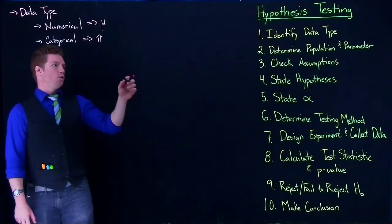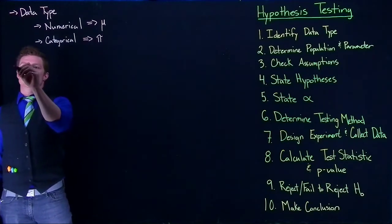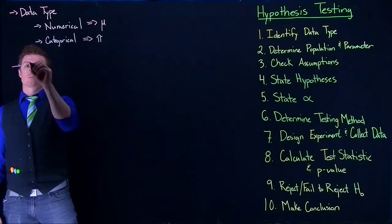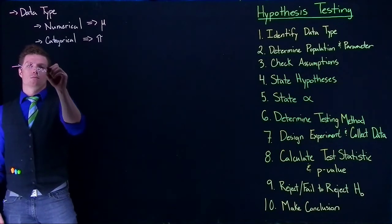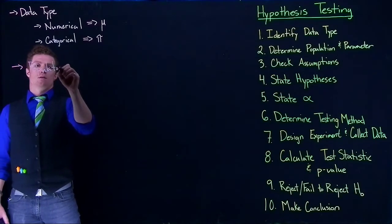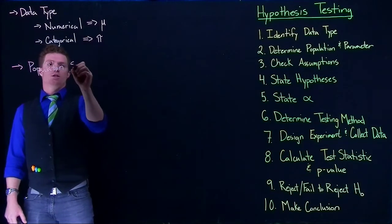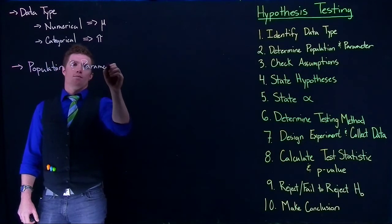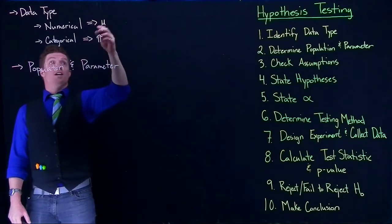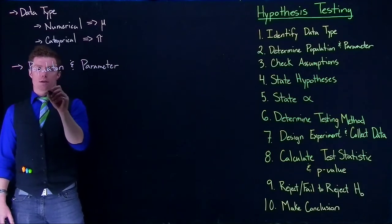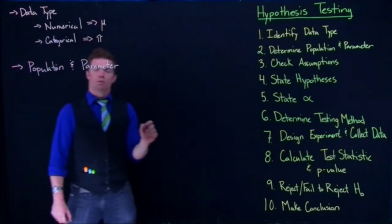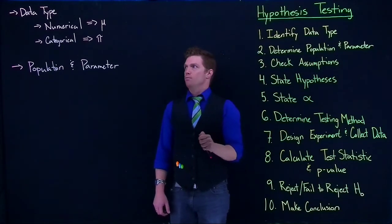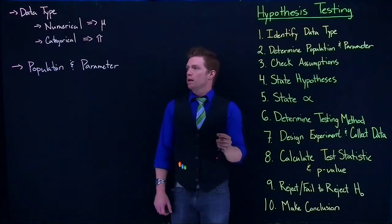And the next one is really close to it. It's who we're dealing with in our population—population and parameter. So I already kind of gave a hint on the parameters up there: that we're going to be dealing with mu or we're going to be dealing with pi, based upon if we're dealing with numerical or categorical.